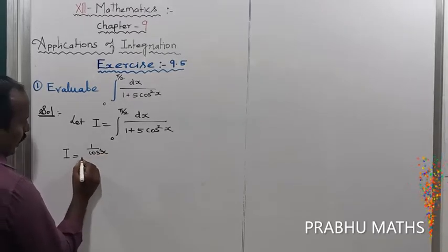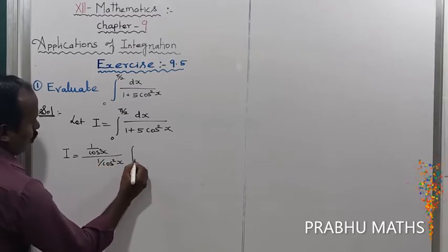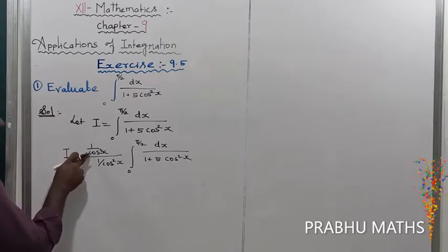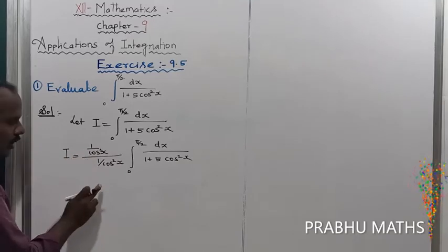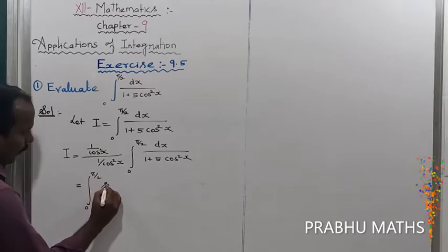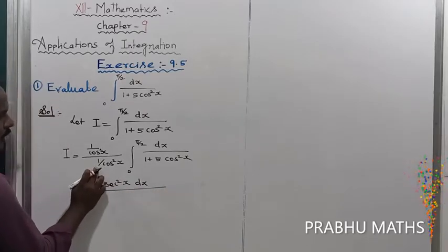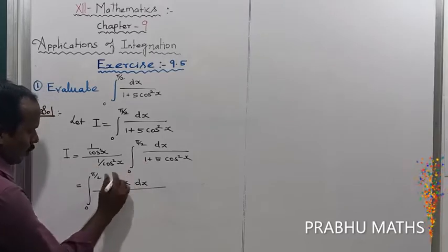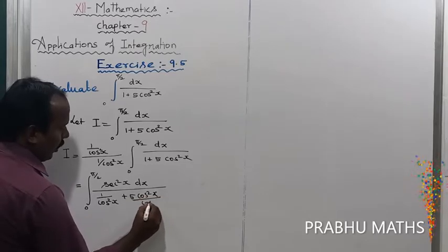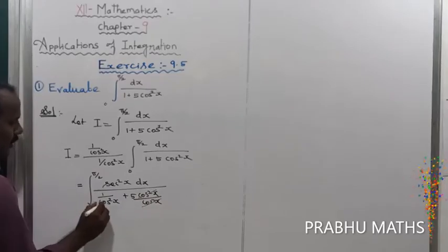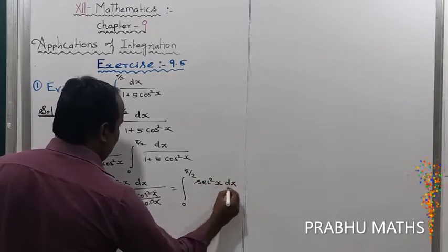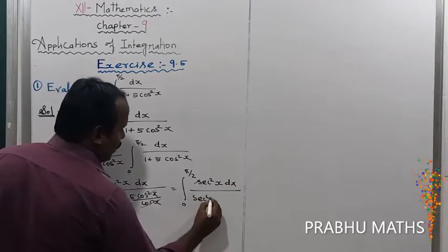Multiply numerator and denominator by 1/cos²x. The integral of 0 to π/2 of dx divided by 1 plus 5cos²x. Numerator 1/cos²x and denominator 1/cos²x: the numerator converts to sec²x, and the denominator goes inside multiplication. The numerator becomes sec²x into dx. Inside, 1/cos²x multiplied gives: the whole divided by 1/cos²x converts to sec²x plus 5.